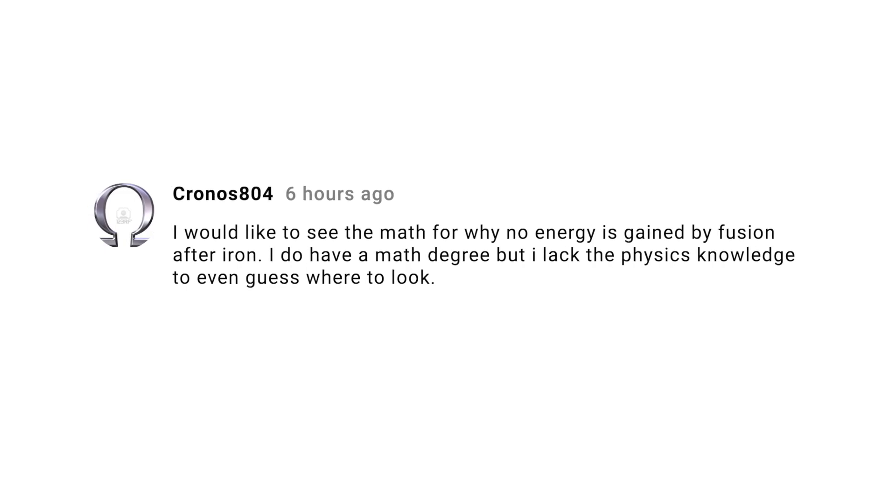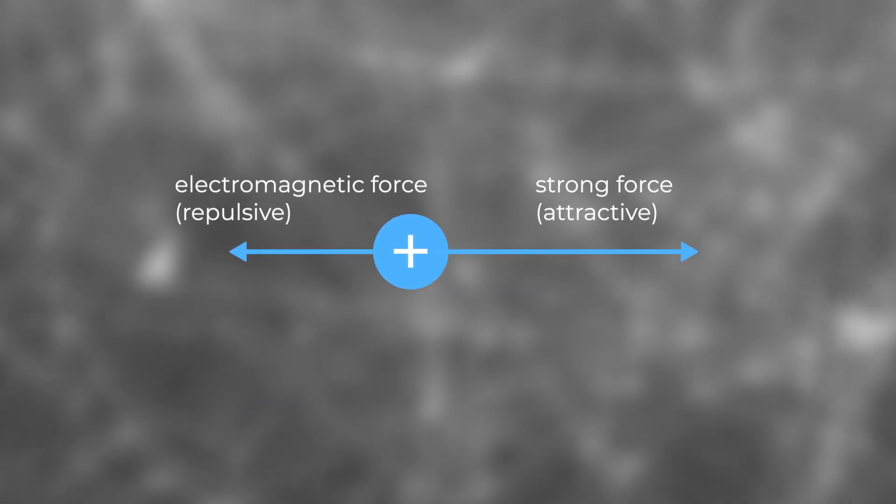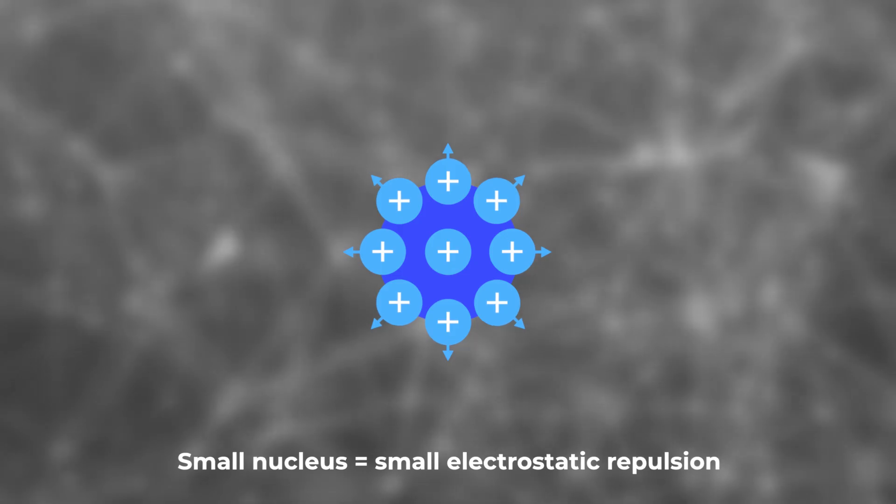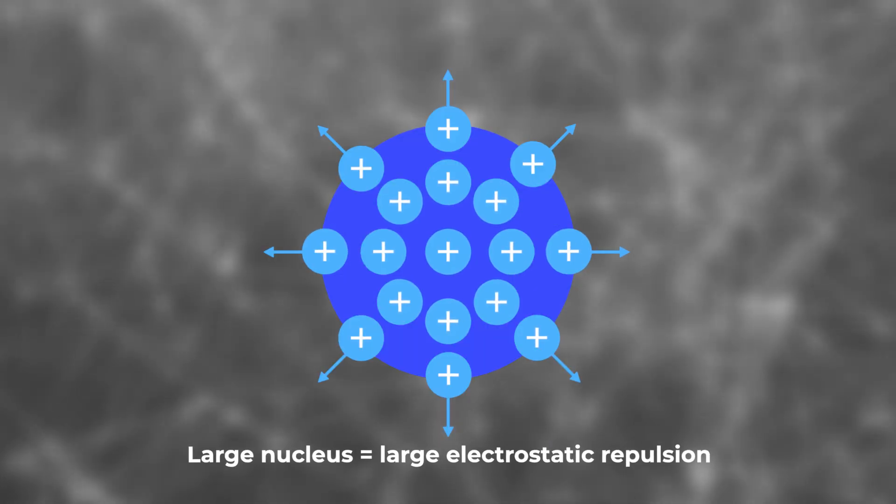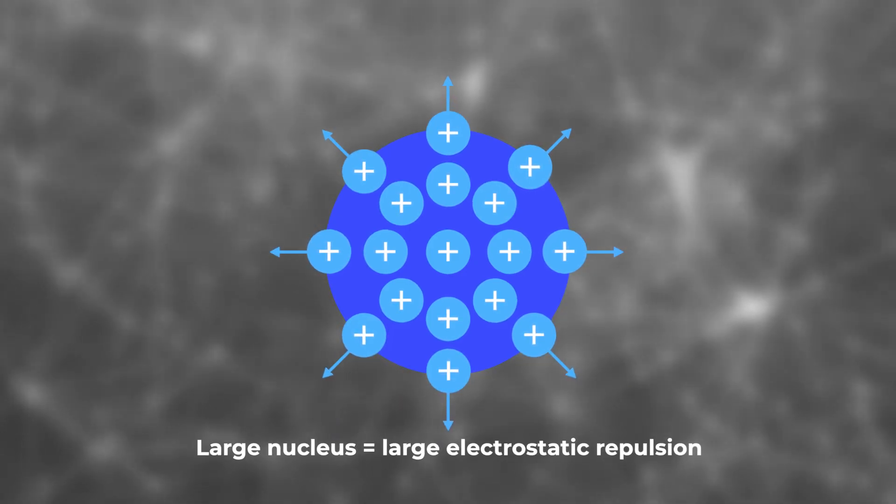Chronos, and many others, wants to know why iron is the heaviest element that can be made by fusion. First, let me say that iron isn't the heaviest element that can be made by fusion, but it is the heaviest stable element that can be made by fusion and get energy out of the process. Two forces govern atomic nuclei: the strong force that holds protons and neutrons together, and the electrostatic repulsion pushing the positively charged protons apart. The strong force is basically a contact force like Velcro, while the electrostatic repulsion has an infinite range. As nuclei get bigger, the electrostatic repulsion becomes more important because it applies over larger distances.